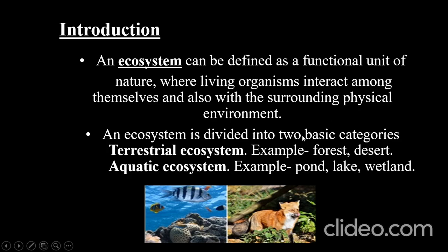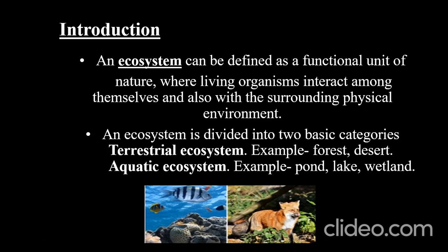An ecosystem is broadly divided into two basic categories: terrestrial ecosystem and aquatic ecosystem. Terrestrial ecosystem is found in landforms — for example, forest, desert, and grasslands all come under terrestrial ecosystem. Aquatic ecosystem is found in water bodies — mainly pond, lake, wetlands, ocean, and seas all come under aquatic ecosystem.